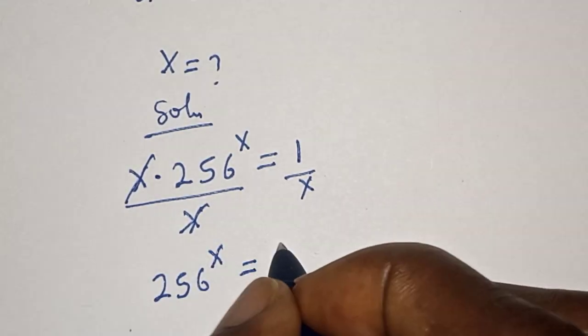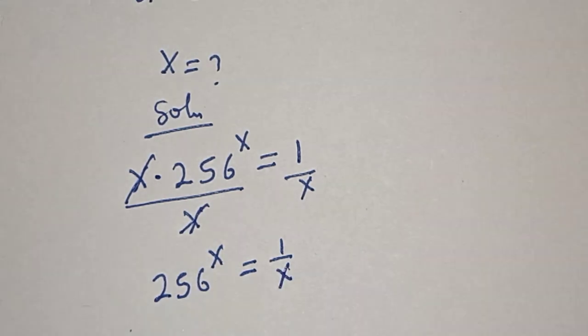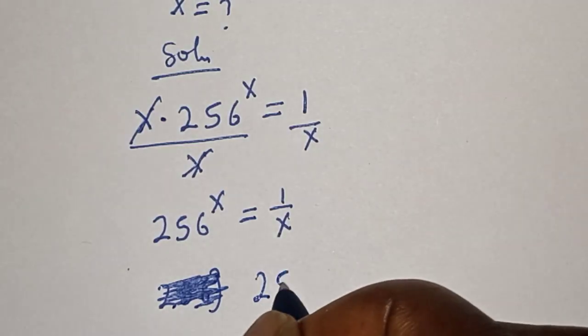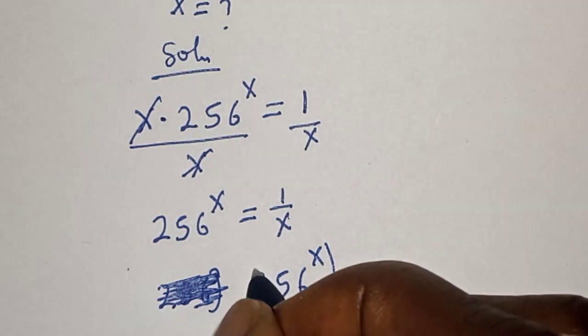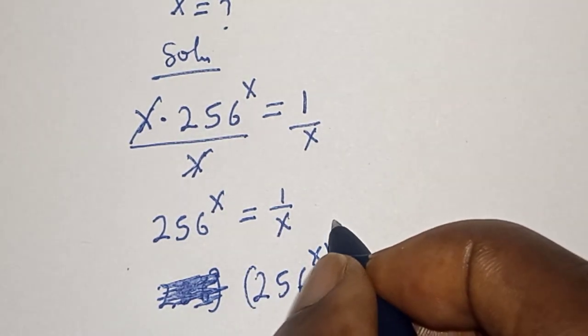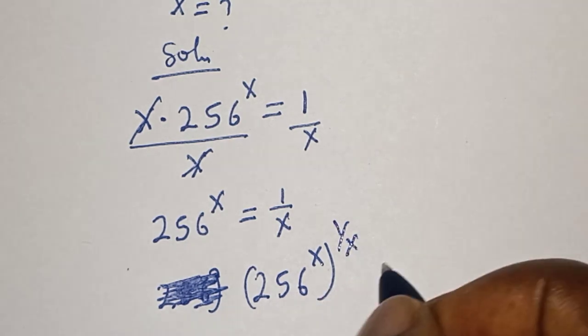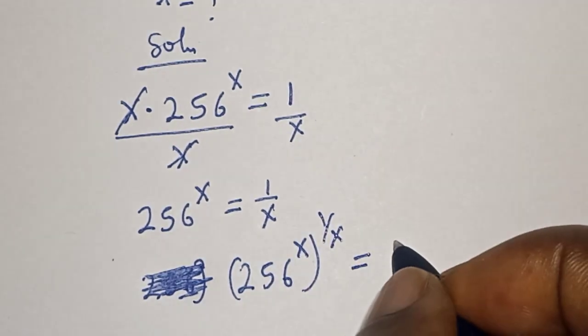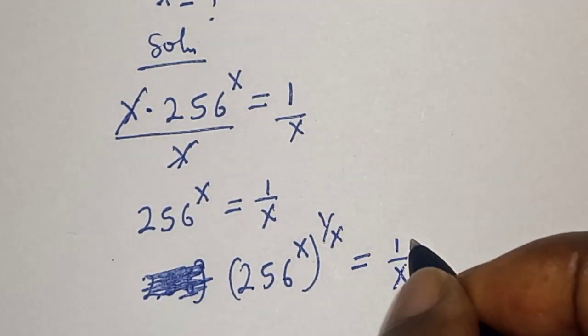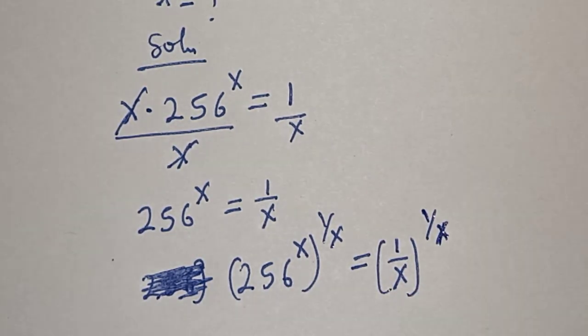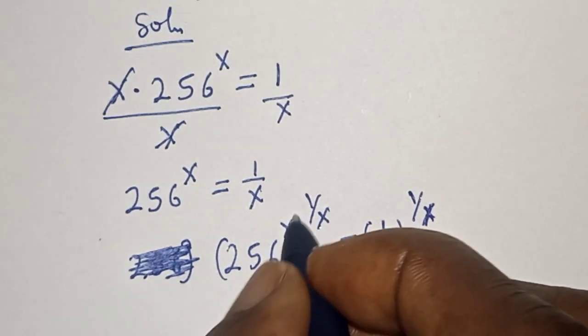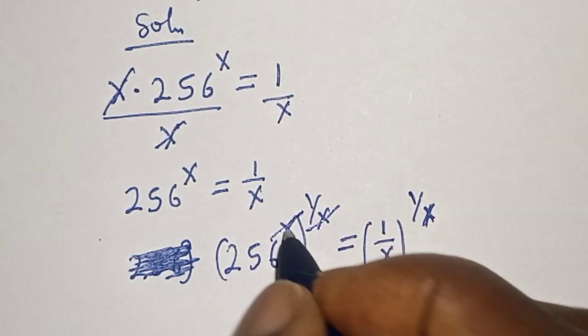256 raised to power x multiplied by 1 over x is equal to 1 over x to the power of 1 over x. And this one will cancel, this one will cancel.